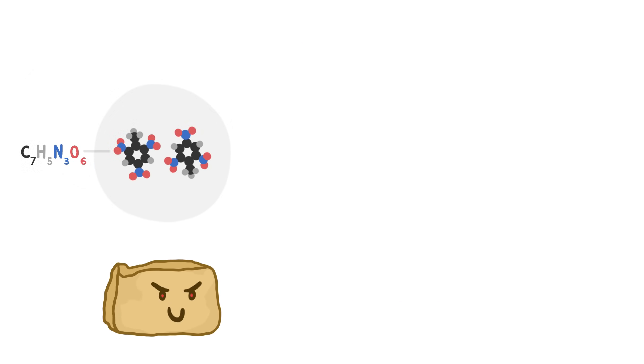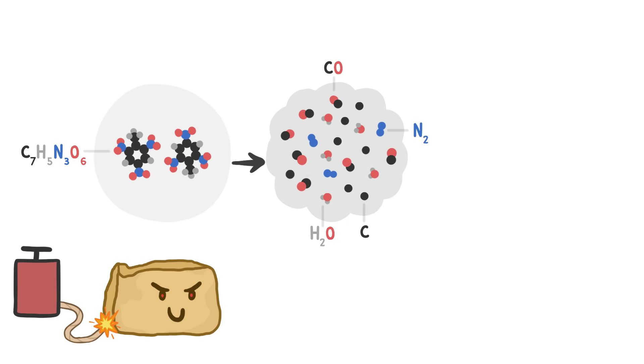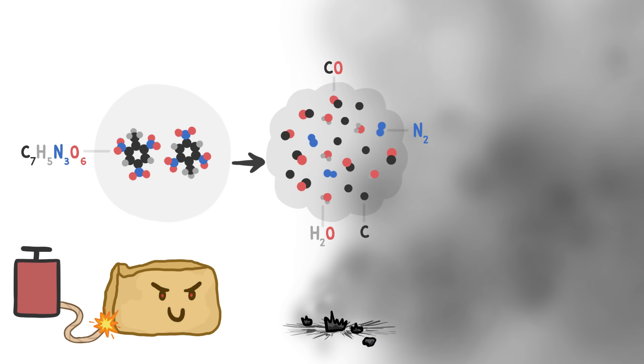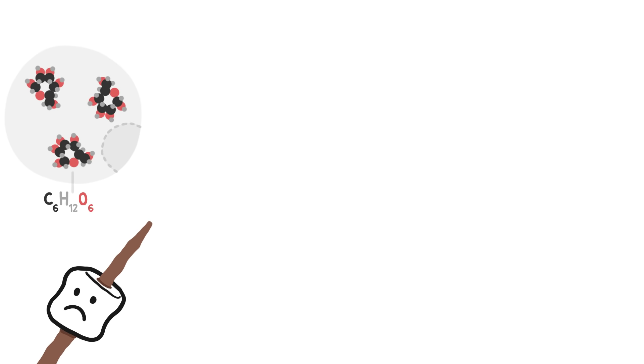Since TNT already has all the atoms it needs to rearrange itself into a bunch of gases and a bit of extra carbon, you just need to add some energy to initiate the reaction, usually with a shock from a detonator, and boom! All that rearrangement happens, and all the energy is unleashed in a few millionths of a second.